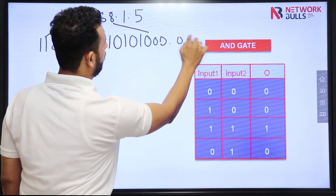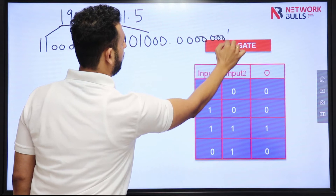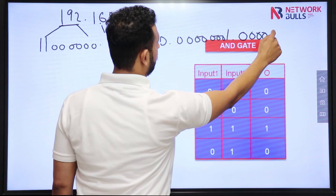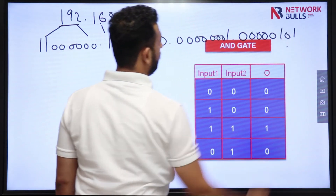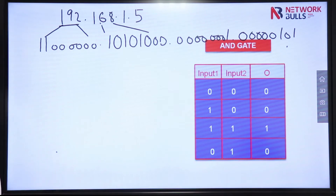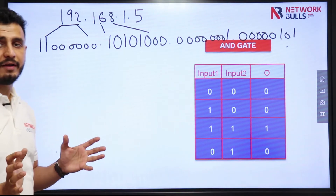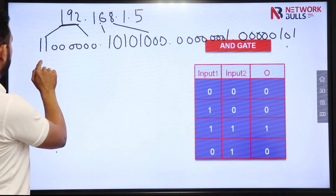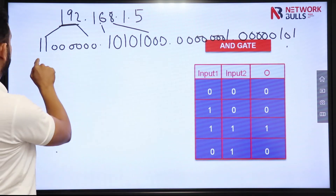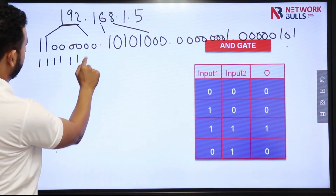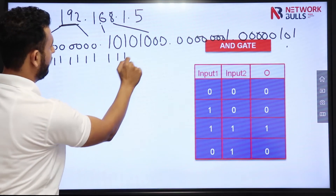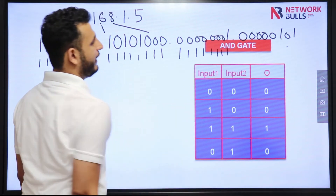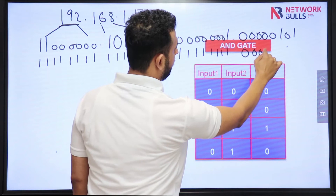Now the subnet mask is 255.255.255.0. Since it is Class C, the first three octets will all be 1s — that is 24 bits of 1 — and the last 8 bits will all be 0. So in binary the subnet mask is 11111111.11111111.11111111.00000000.